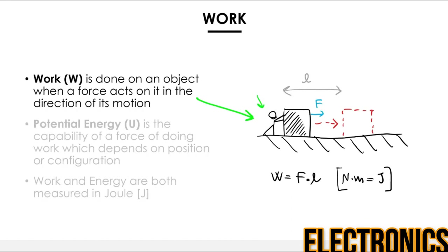Let's say there's a person who wants to push an object with a certain mass in a certain direction. The person will apply a force F in the direction of the motion. After a while, the person will move the object from an initial position to another position at a certain distance L. In this simplified example, the work W is equal to the force multiplied by the distance.